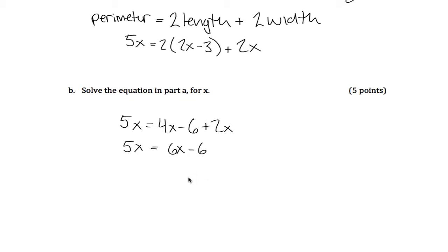Let's subtract 6x from both sides. That gives me negative x equals negative 6. If you multiply both sides by negative 1, you get x equals 6.